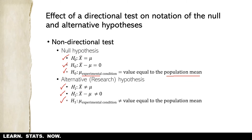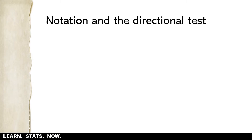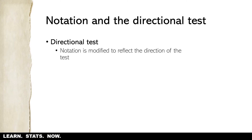The key thing in a non-directional test is the operator: it's either the equal sign or the not-equal sign. When we move to directional tests, the notation is modified to reflect the direction of the test.